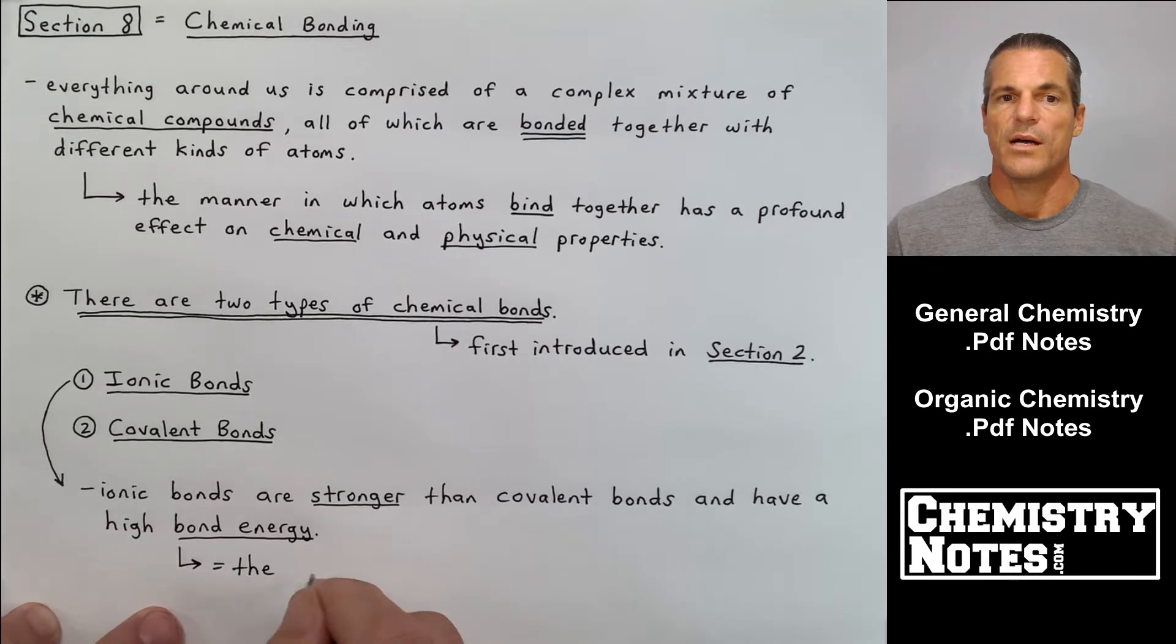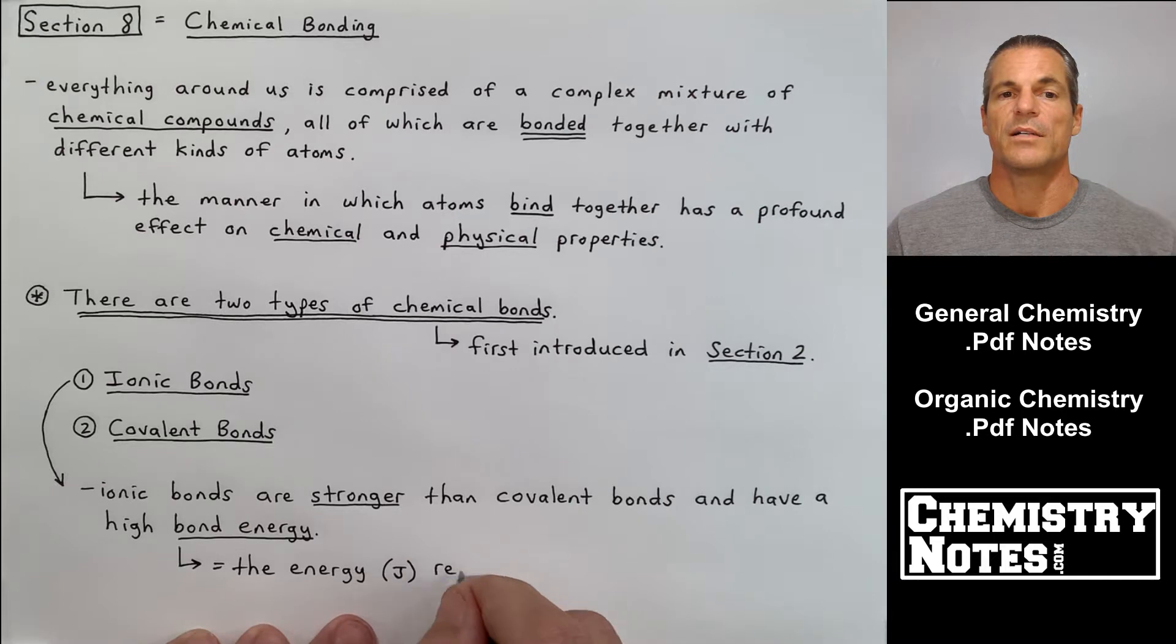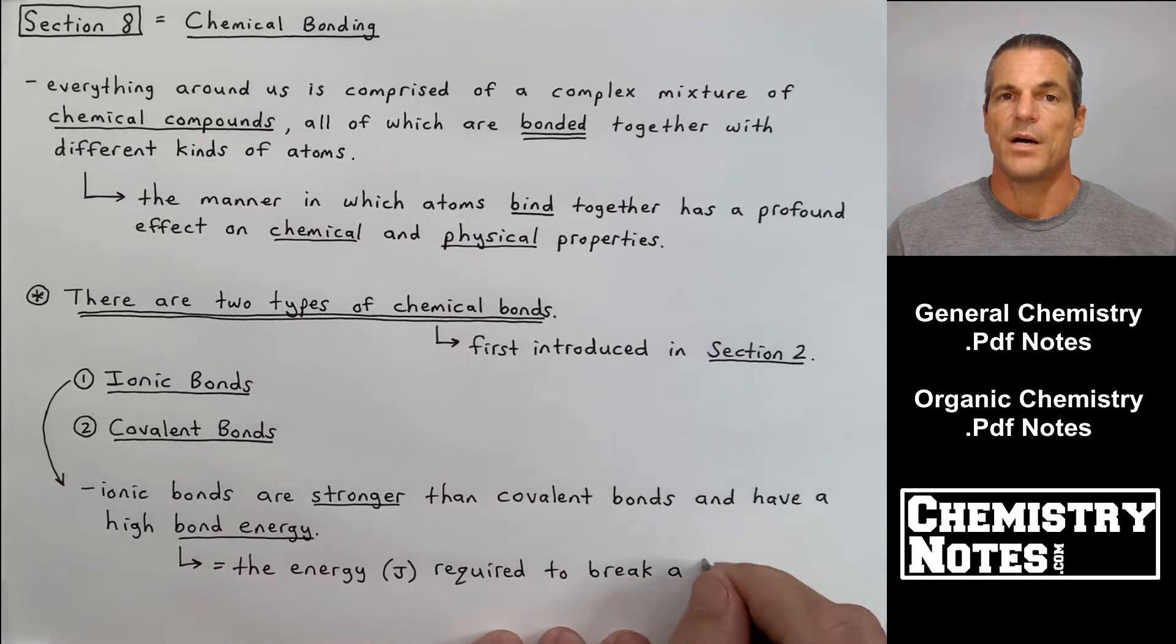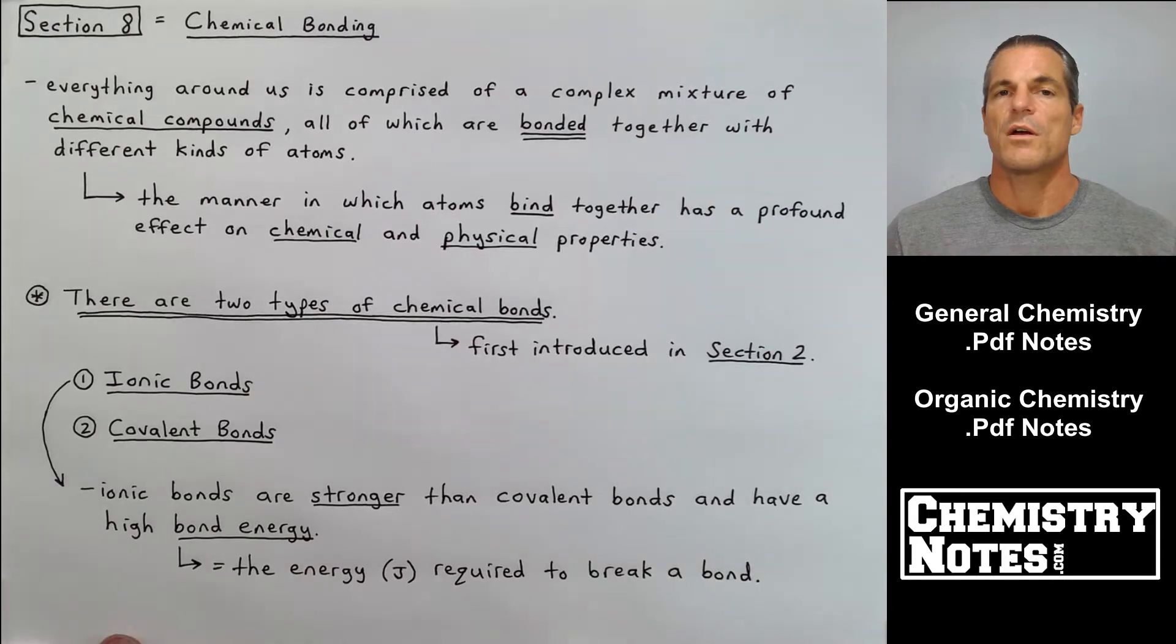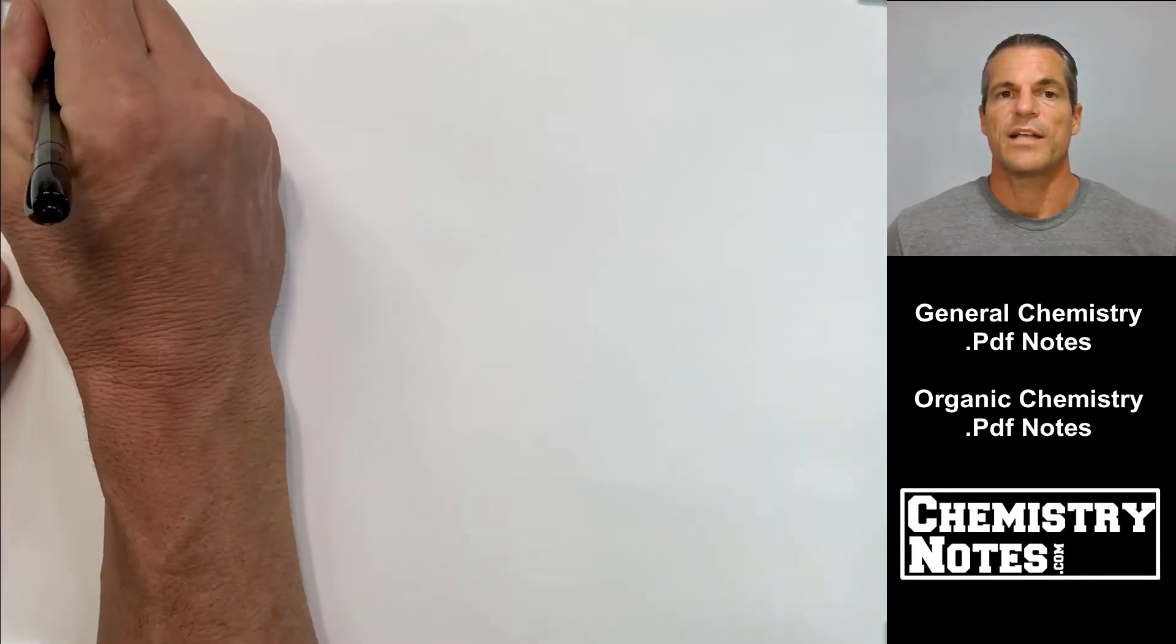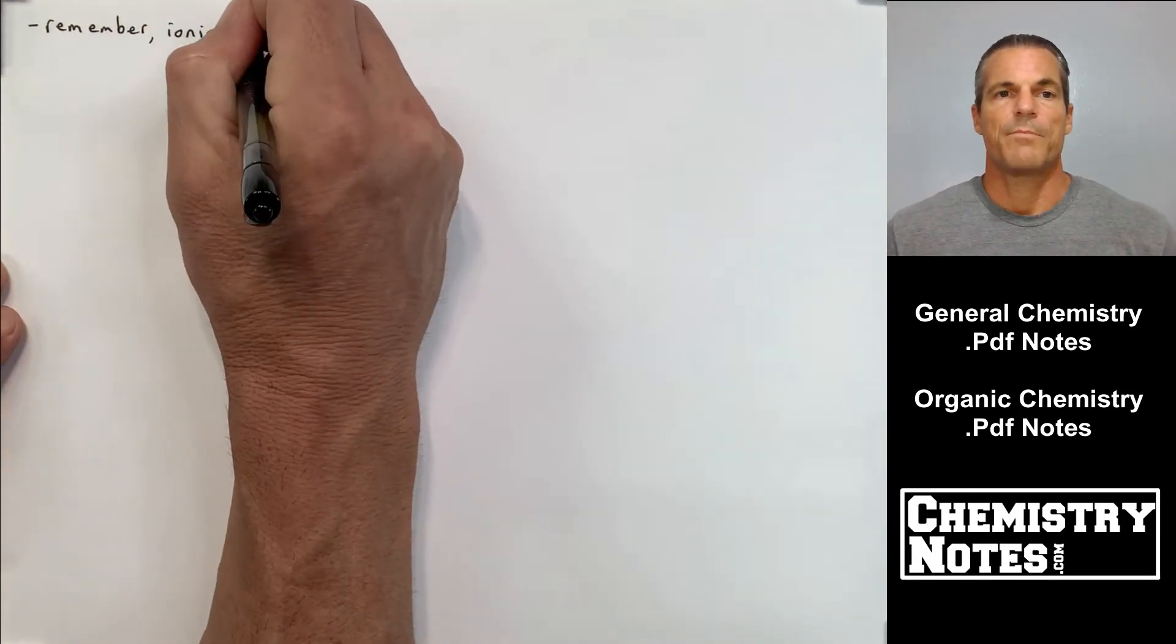Let's take a closer look at ionic bonds. It says in our notes that ionic bonds are stronger than covalent bonds and have a high bond energy. The stronger the bond, the more energy that's required to break that bond.